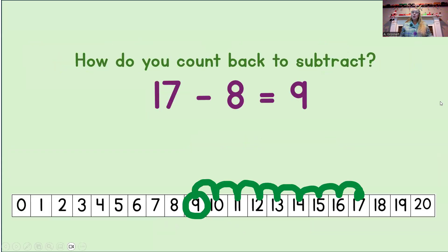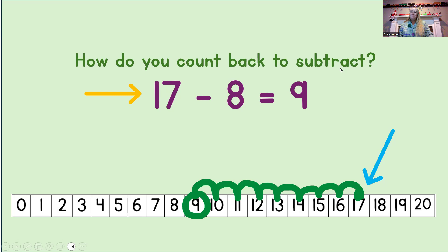How do you count back to subtract? Well, there are a few steps we can follow to count back to subtract every time. First, we look at the minuend. That's the first number in the equation, and that's the number 17. We mark that number with a dot on the number line.